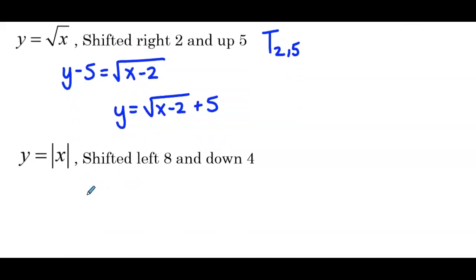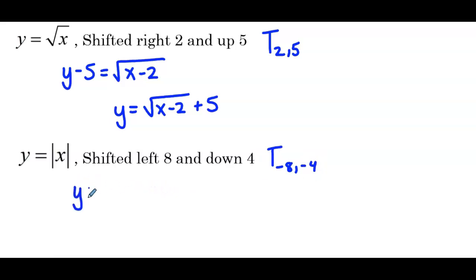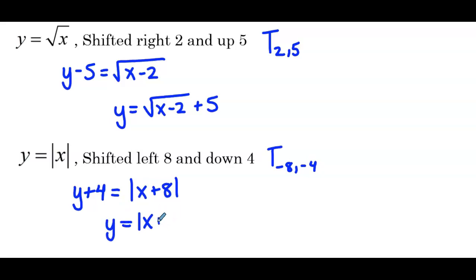The next function is y equals the absolute value of x, and it's been shifted left 8 and down 4. So our translation: left 8, so we're subtracting 8 from x, and down 4, we're subtracting 4 from y. So in the equation, we want to do the opposite — add 4 to y, and inside the parent function add 8 to x. Put in y equals form, we have y equals the absolute value of x plus 8 minus 4.